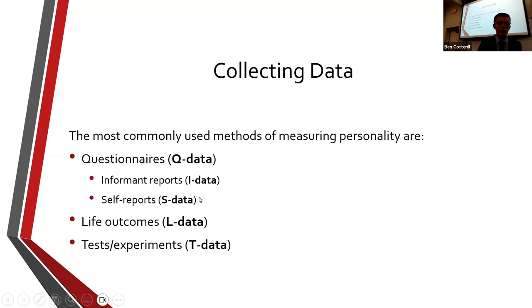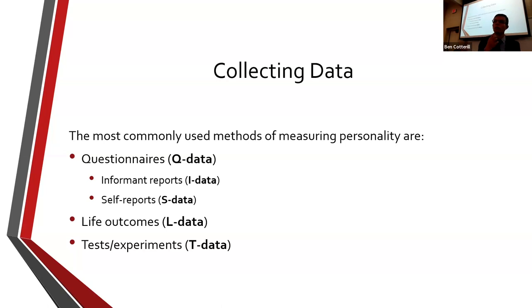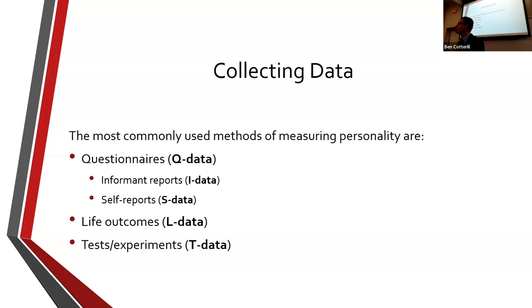Lastly, there is T data. These could be tests like the projective tests we talked about last week — the Rorschach inkblot test and so on. But in research they're more often experiments. This could be some kind of game scenario in which participants can share with each other, be cooperative, and I'm taking note of how cooperative they are in the task or how self-interested they are.